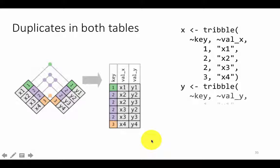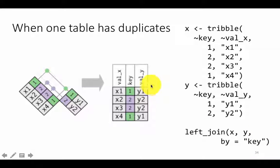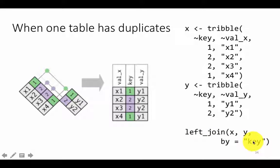Till now we have explicitly specified the column by which we want to perform the join. We said `by = key`. Key is not anything special — it's just the name of the column in that particular table. In this column it's called key, and in the other column it's also called key, and we are saying join both tables by the column whose name is key. That's how we are doing the join — we have explicitly specified `by`.